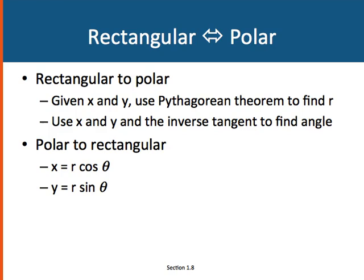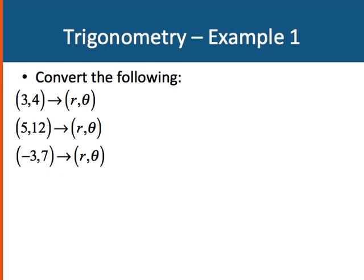I can go from rectangular coordinates to polar coordinates, and back and forth. Given an x and y, I would use the Pythagorean theorem to find r, and then use x and y and the inverse tangent function to find the angle. Or I could use r and x and cosine, or r and y and sine, doesn't matter. Whereas, if I want to go from polar to rectangular, I know that x is equal to r cosine theta, and y is equal to r sine theta.